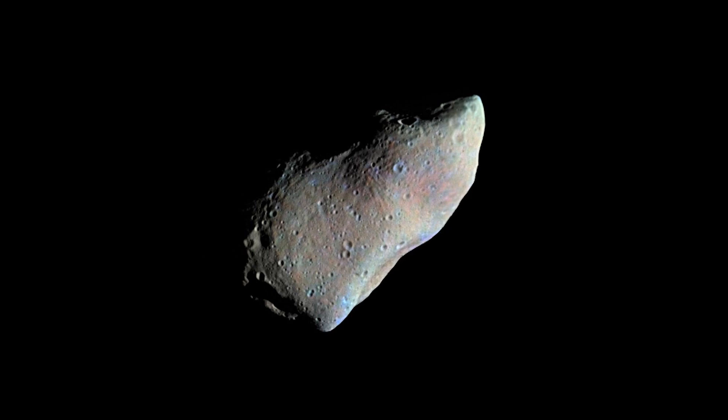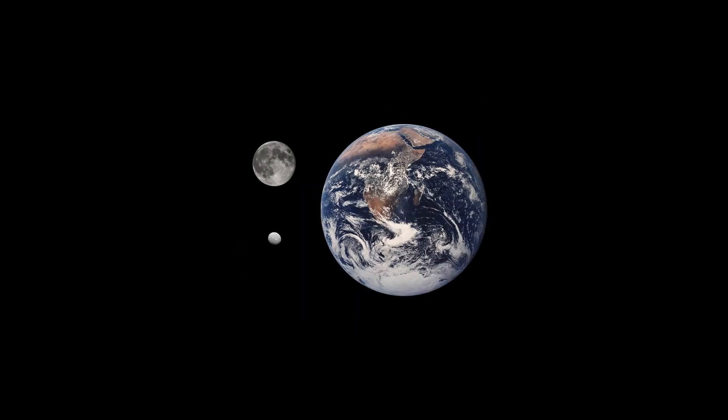Before 2006, the IAU officially used the term minor planet, but that year's meeting reclassified minor planets and comets into dwarf planets and small solar system bodies, SSSBs.